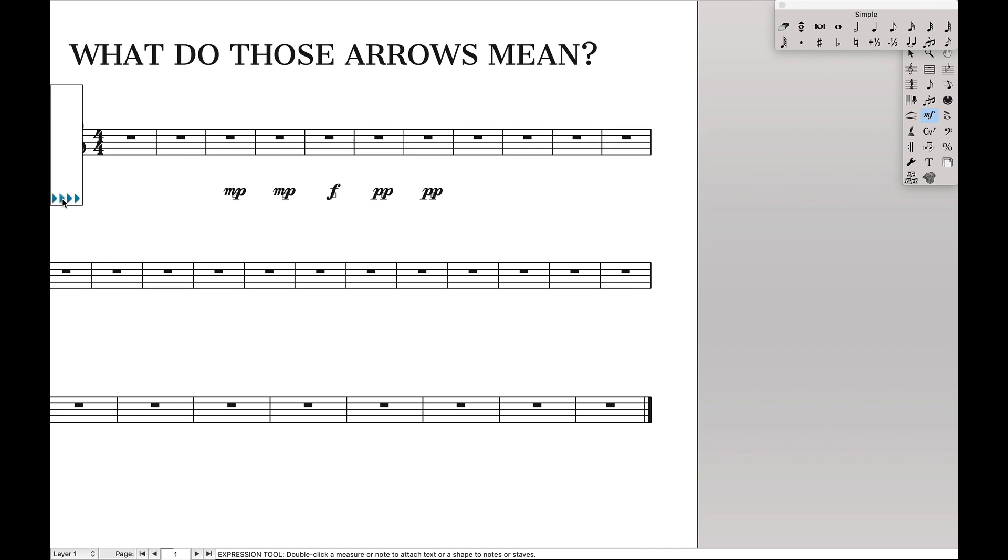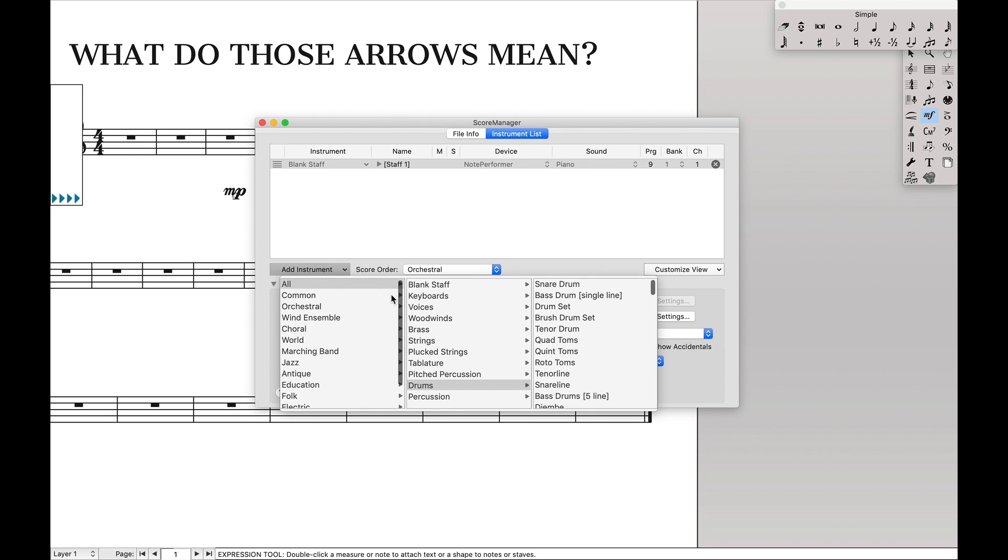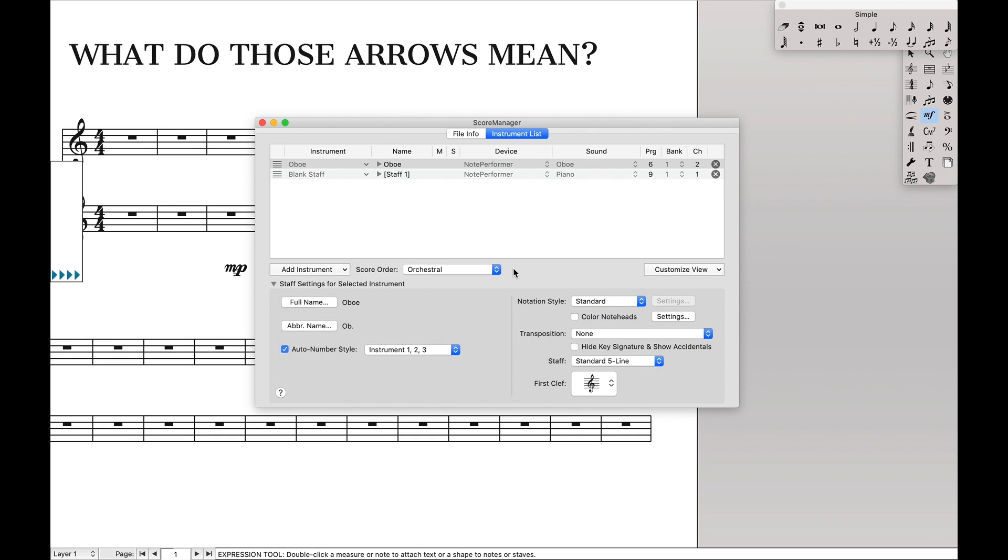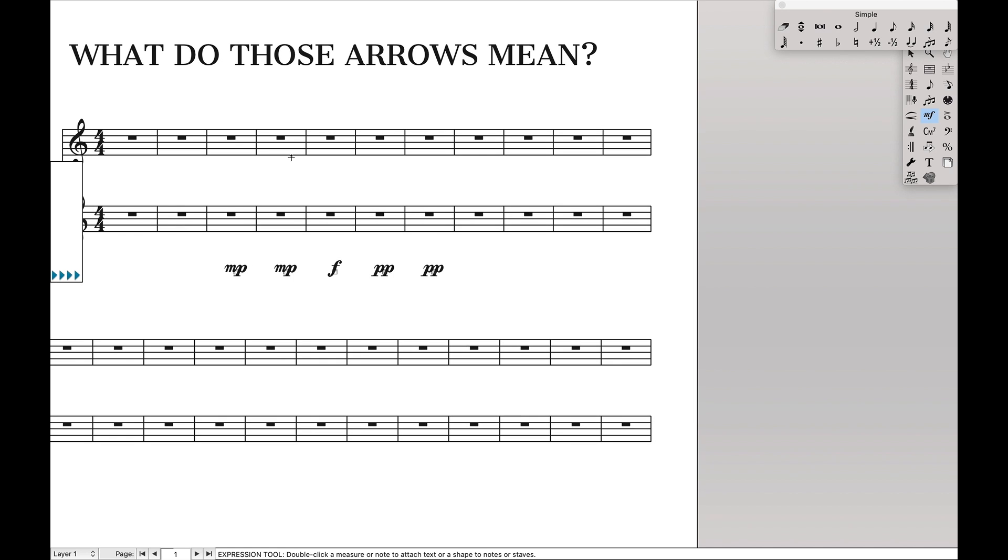The next one sets the baseline globally for a specific part. So for instance, if I create another part, we're gonna come over here, let's just add an instrument. Oboe looks good today. And we have more dynamics or something like that, and over here I move this up on this part. It does not change it over here on this other part.